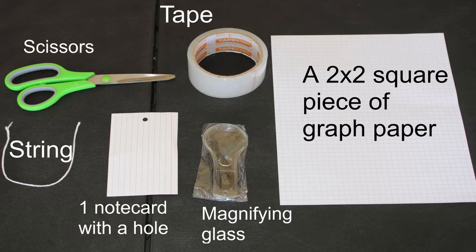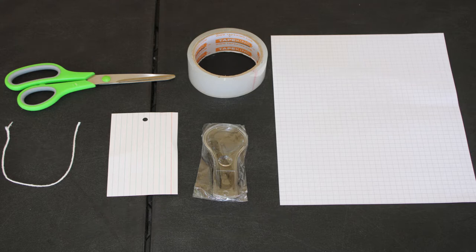For this activity, you will need some tape, a pair of scissors, a string, a notecard with one hole already punched in it, a magnifying glass, and a 2x2 square piece of graph paper that we already cut for you.